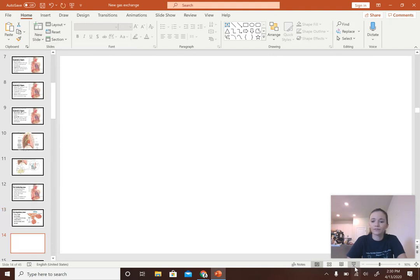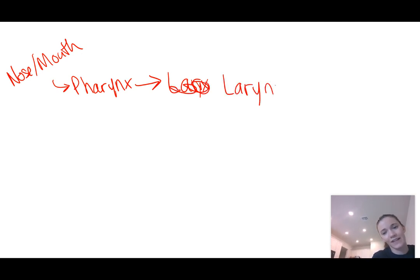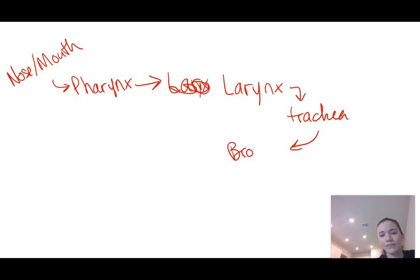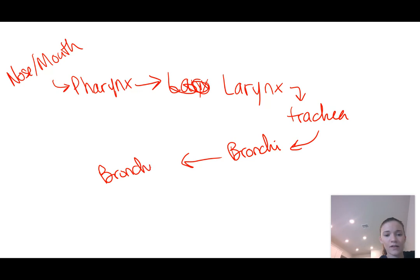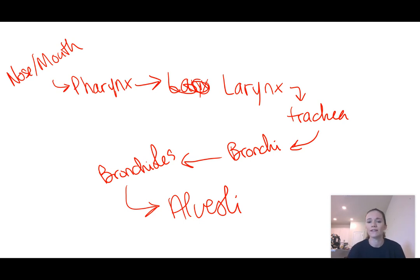To keep track of the pathway: air comes in through the nose or mouth, then pharynx, larynx, trachea, bronchi — note that bronchitis is inflammation of the bronchi — then bronchioles, and finally the alveoli. Lots of names to remember, but you really just need to know the pathway, so it's not too crazy.